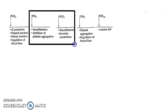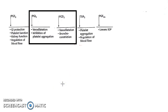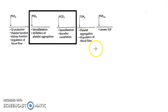Coming to PGI2 and PGD2 — both cause vasodilation, helping blood to flow, and inhibition of platelet aggregation. Remember that bronchoconstriction is specifically associated with PGD2.